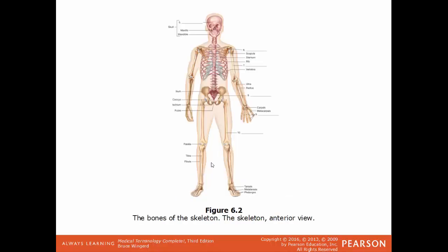There are 206 bones in the skeleton. Some easy landmarks include the skull, the sternum, the thoracic or rib cage, the collar bones, the upper arm humerus, the two bones of the forearm, the pelvis, the femur as the main bone of the thigh, two bones in the lower leg, and all the bones in the feet.